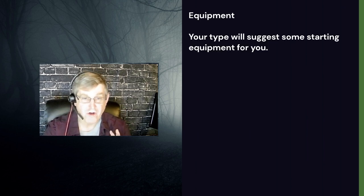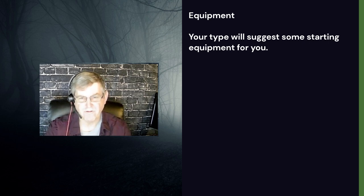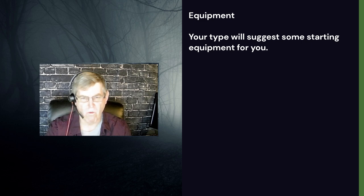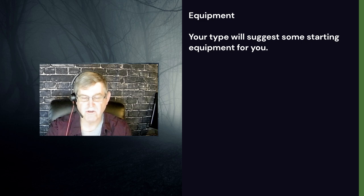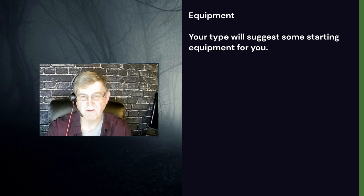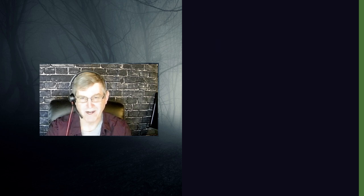Your character type will suggest some starting equipment — generally two inexpensive items, two moderately expensive items, and one expensive item. Equipment in the Cypher System plays only a small role; it's far more important to focus on what you can do than what you have. In my game, I don't want to spend time on shopping and inventory management. If it makes sense and it's mundane equipment, you probably have it. But if you want specialty tools like a grappling hook and rope, make sure to note those specifically.